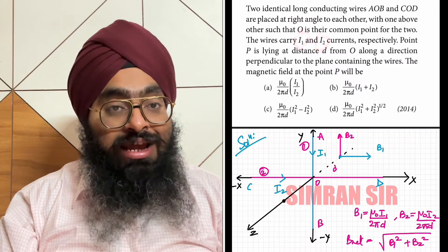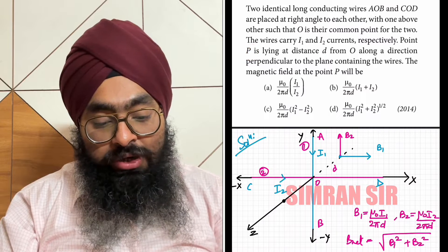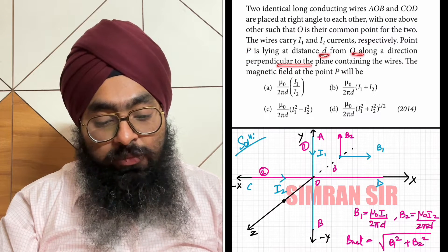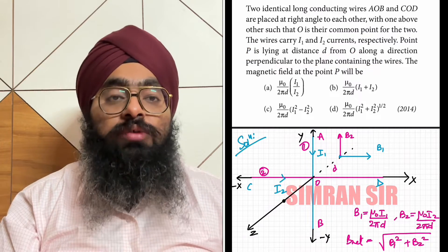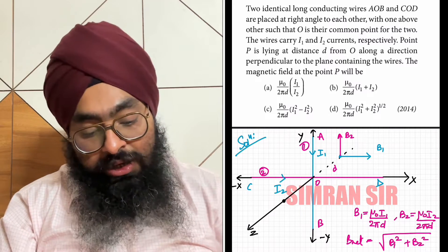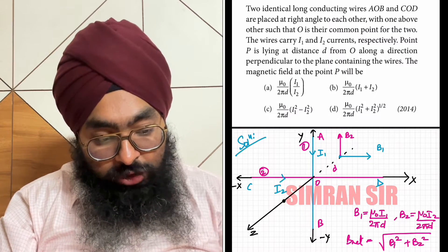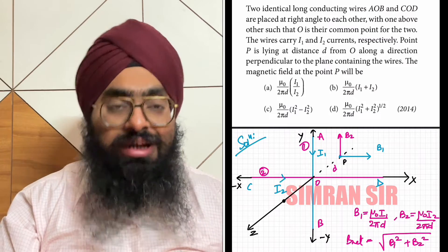The wires carry currents i1 and i2 respectively, and point P is at a distance d from O, perpendicular to both wires. We have to find the magnetic field at point P. In short, I am going to tell you what the question is saying.